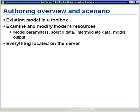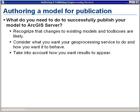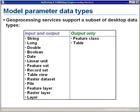Everything is located on the server — this is just one of many scenarios possible with ArcGIS Server. When you author a model for publication, you need to ask yourself what you need to do to successfully publish a model. It's important to realize that changes to any existing model and toolboxes are likely. You need to consider what your geoprocessing service is going to do and how you want it to behave, and how results are going to appear when they return to the client application.